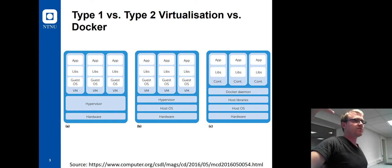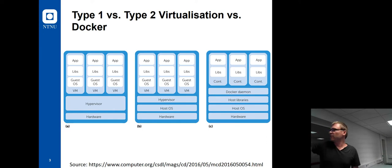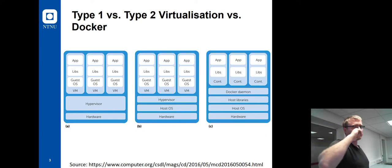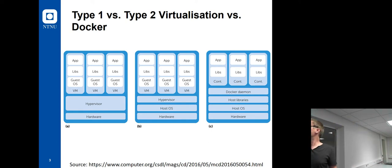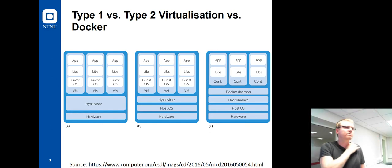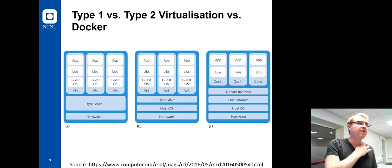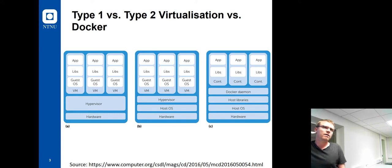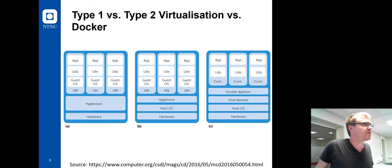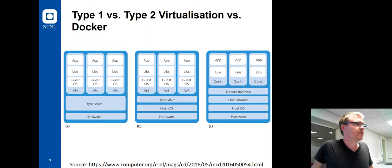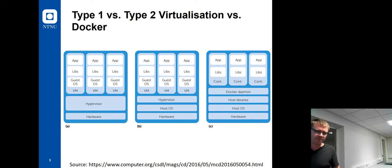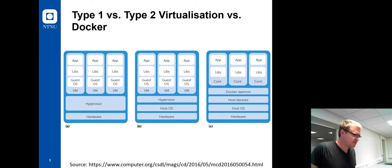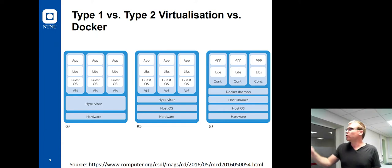VMware is a company specialized on virtualization with products in both categories. Their ESX servers run directly on hardware with the entire organization's servers virtualized. You may also have come across VMware Workstation or VMware Player, which fall in the type 2 category where you load an image into software. Microsoft had Virtual PC in a similar category. In Mac OS X, there's Parallels Desktop. There are quite a few solutions out there.